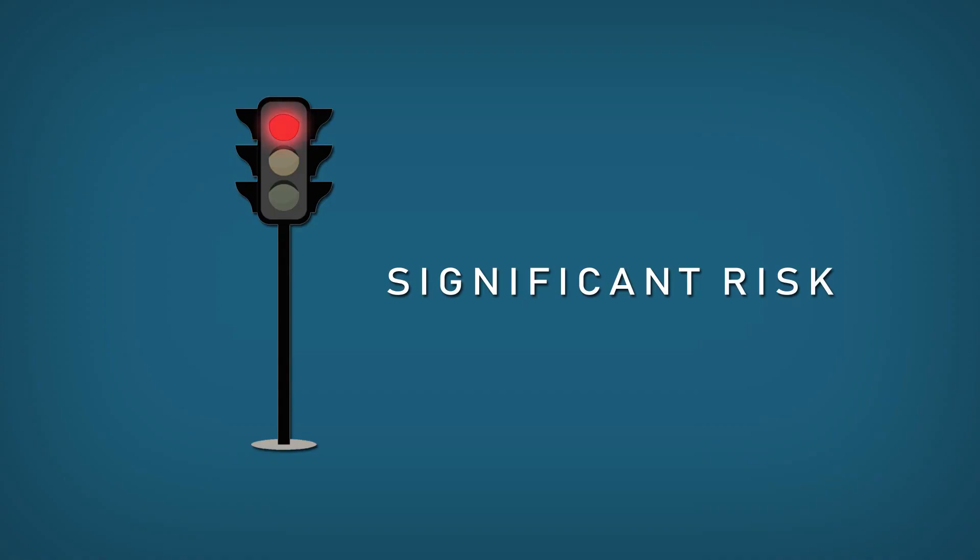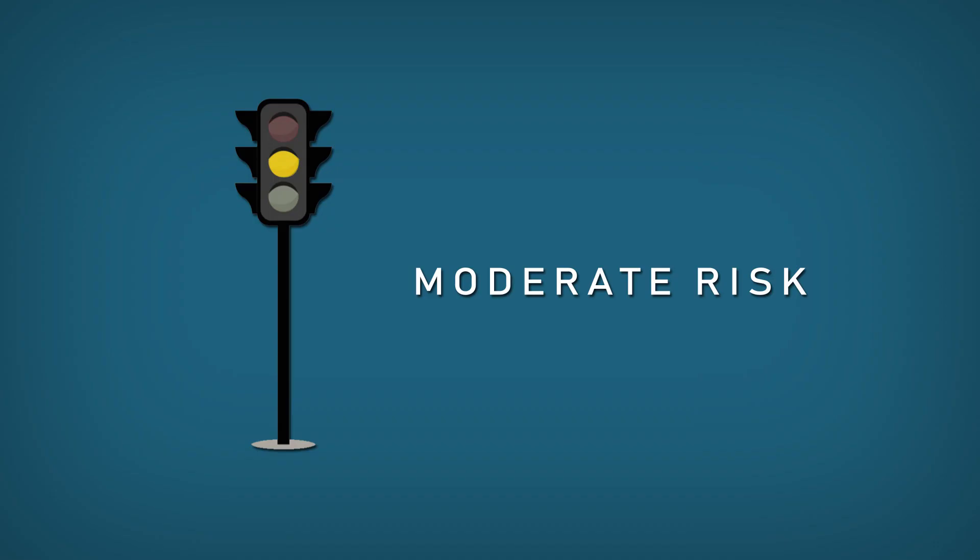A red light is used with confidential information that poses a significant risk and should not be shared at all. An amber light is used with confidential information that poses a moderate risk and should only be shared with parties in the same organization or group.